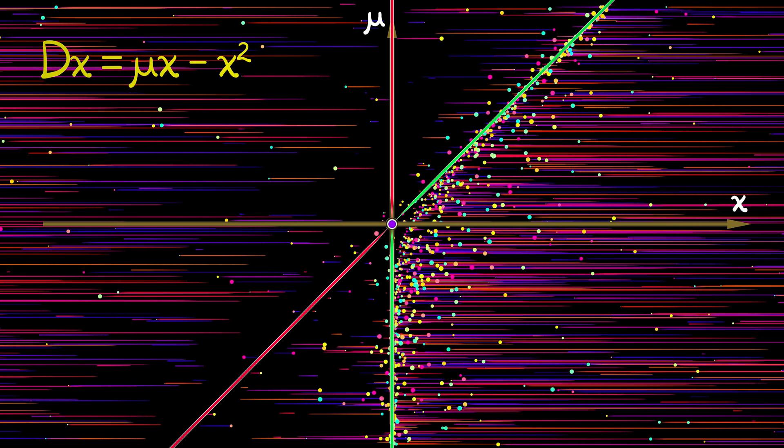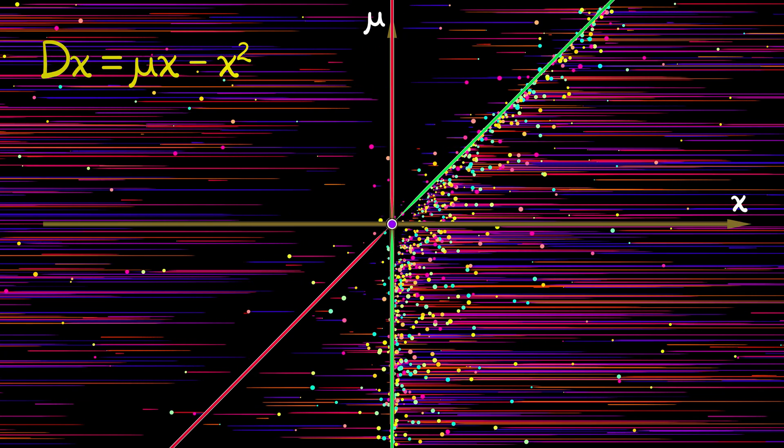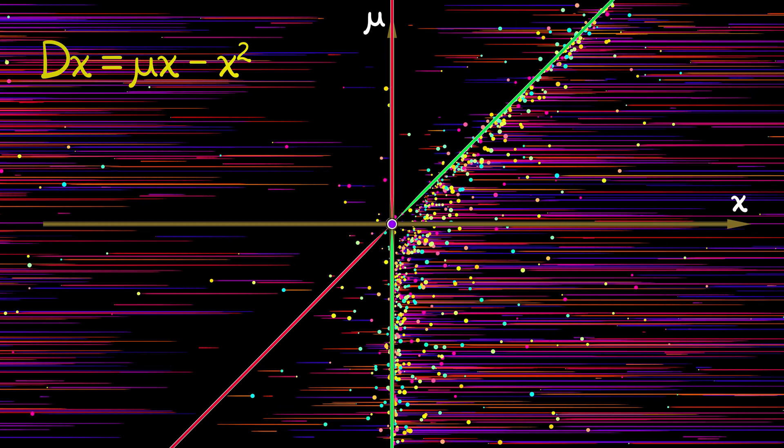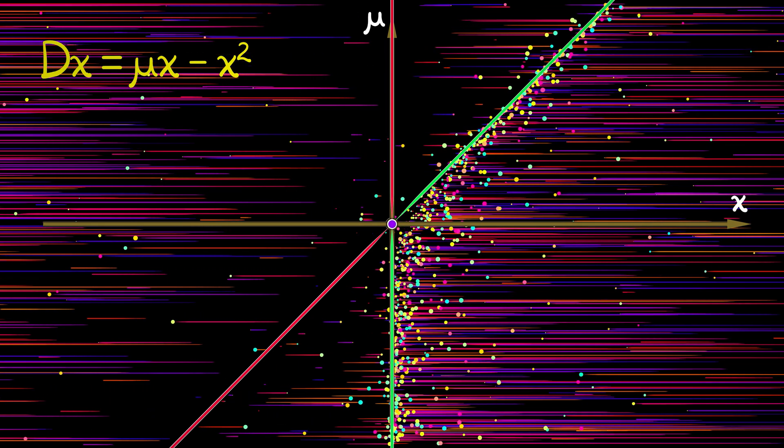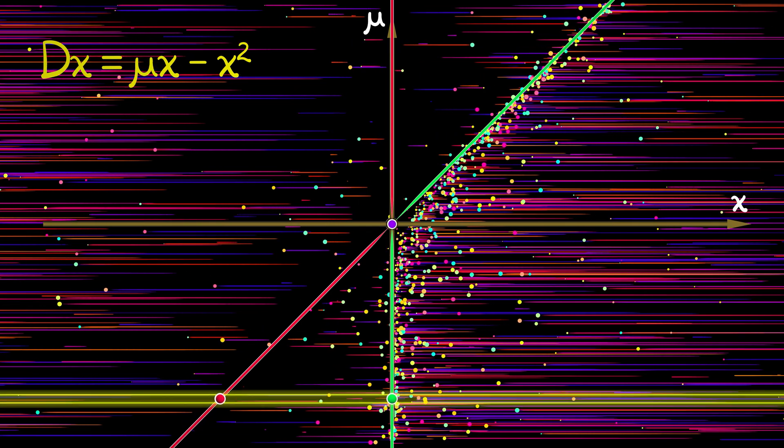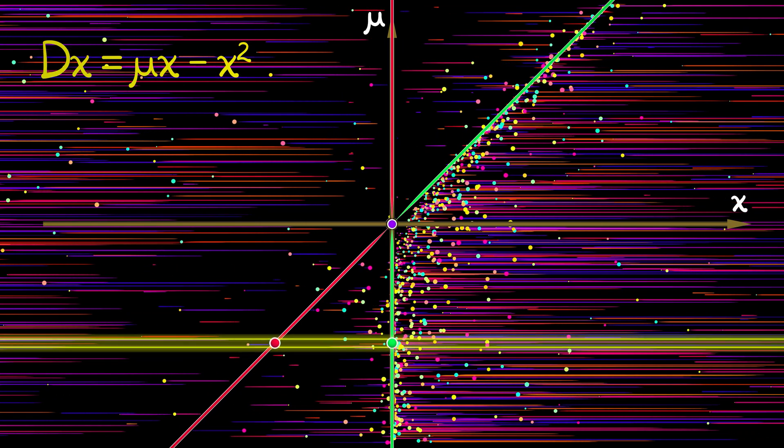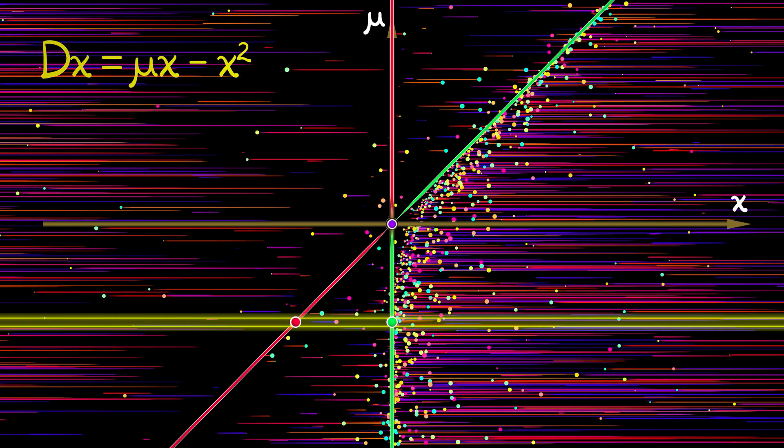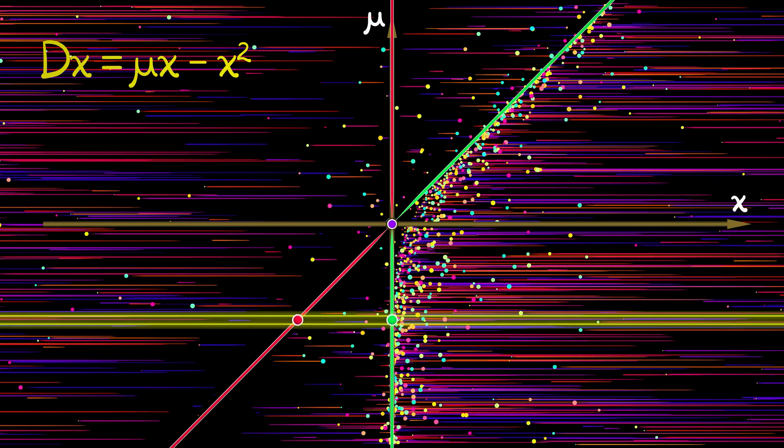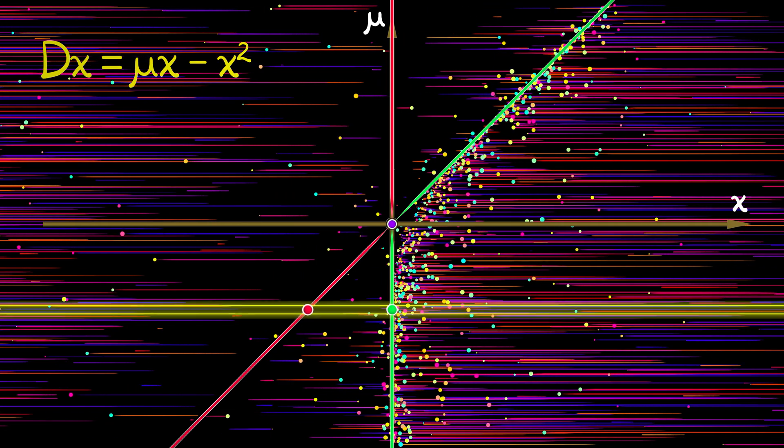Again, remember, you have to think about this in terms of choosing a particular value of mu and then looking at the system at that value and then changing mu. And what we see is that whether mu is positive, whether mu is negative, you're going to have one stable and one unstable equilibrium.